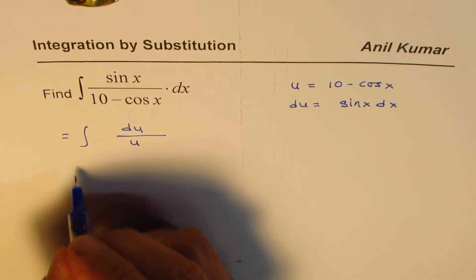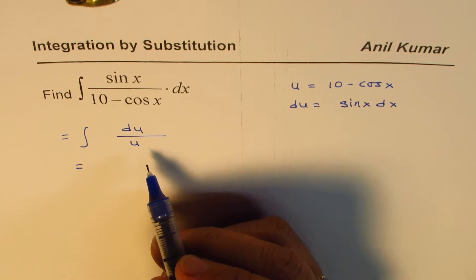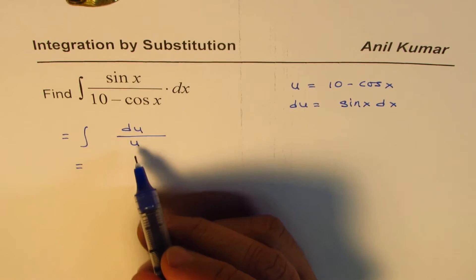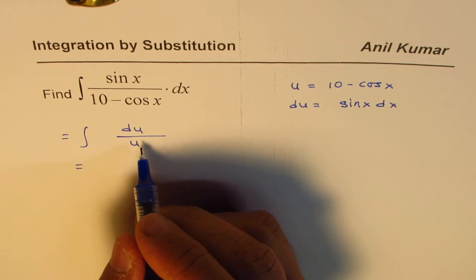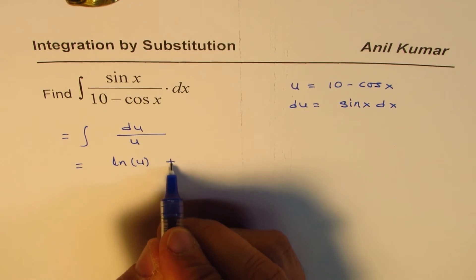So now we have 1 over u. The integral of 1 over u is ln u, so we could write this as ln u plus c.